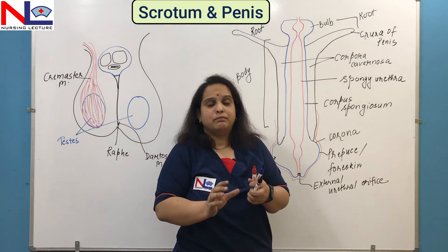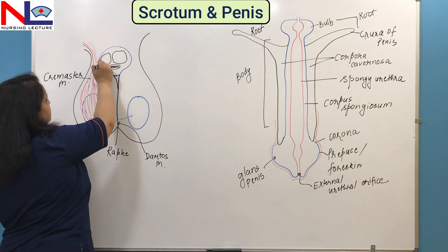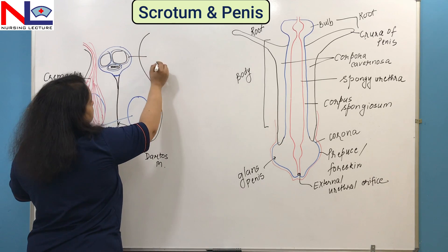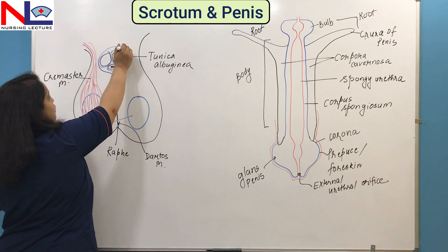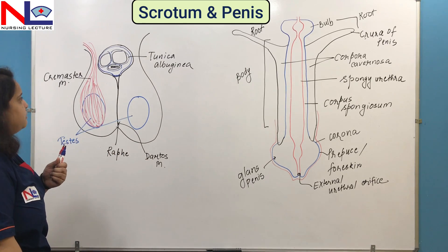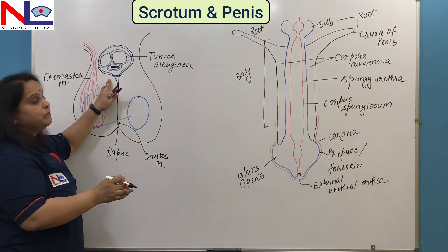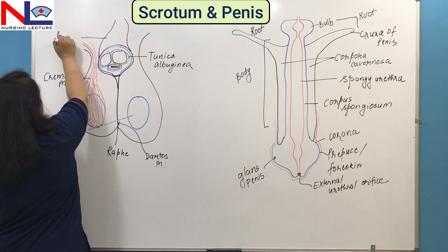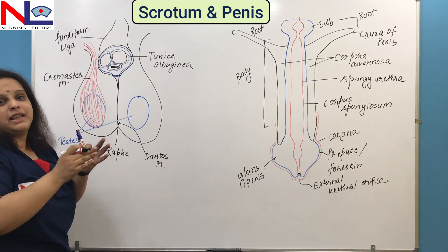All three erectile tissues are covered by a fibrous layer called the tunica albuginea. All three masses together are enclosed by a skin and subcutaneous layer. The structure of the penis is supported by two ligaments because it is a hanging structure. One is the fundiform ligament, which is an extension of the linea alba.